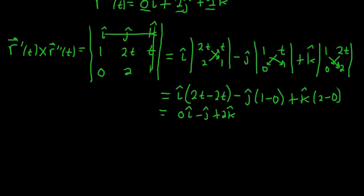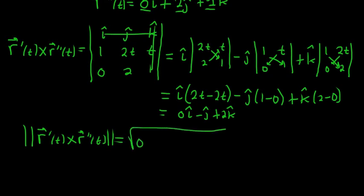Went through that kind of quickly. So now we take the magnitude of that. So the magnitude of this cross product is going to be the square root of each of the components squared. So it'll be 0 squared plus (-1)² plus 2². So we end up with 1 plus 4, which is 5. So we get the square root of 5.